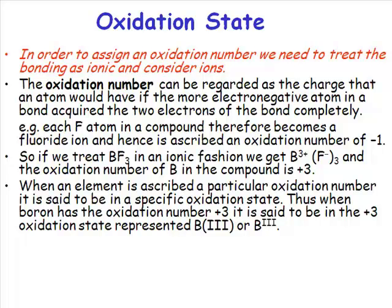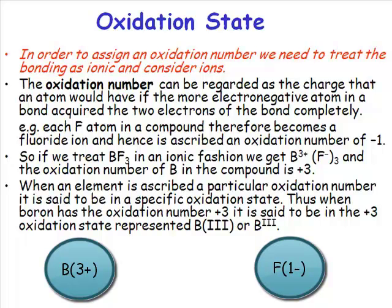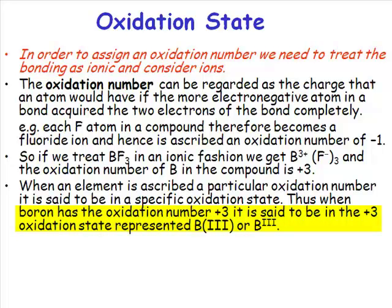If we do that, we have three of these bonds. That means we will have a boron 3+ species and fluoride minus. If it is boron 3+, we say it has got the oxidation number of +3, and another way of saying that is in oxidation state three.